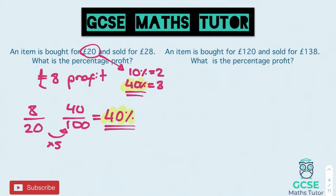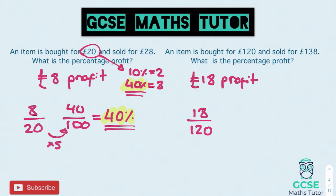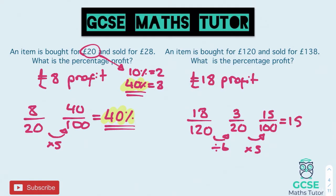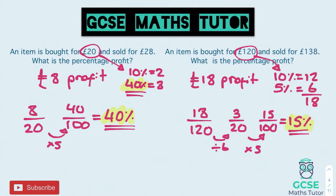Second question: an item bought for £120 sold for £138 gives £18 profit. The fraction 18 over 120 — both divide by 6 to give 3 over 20. Multiply by 5 to get 15 over 100, which is 15%. Using the percentage method: 10% of £120 is £12, and 5% is £6. Adding £12 and £6 gives £18, and 10% plus 5% is 15%.